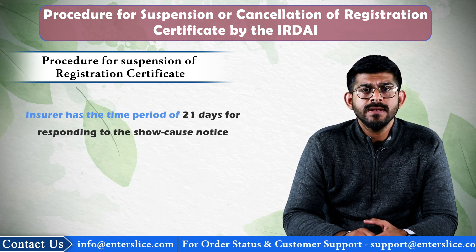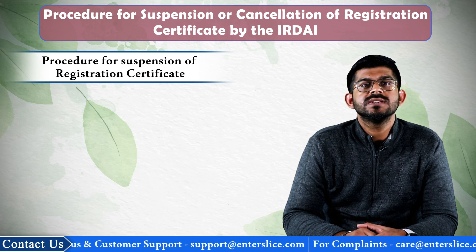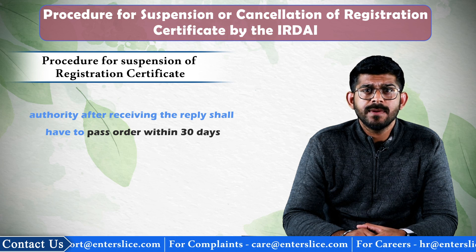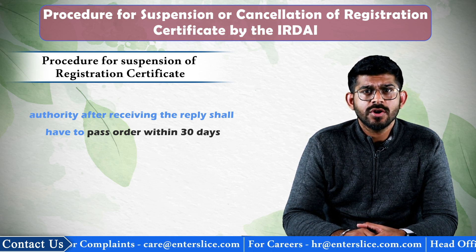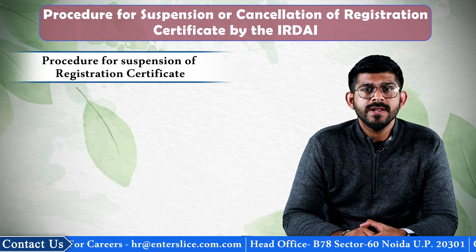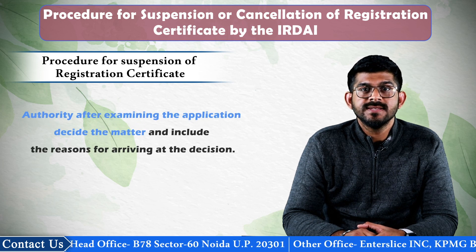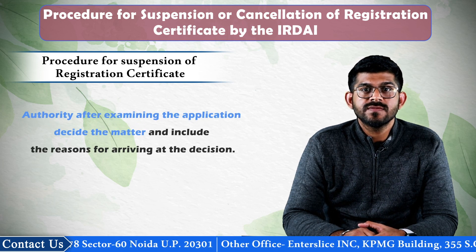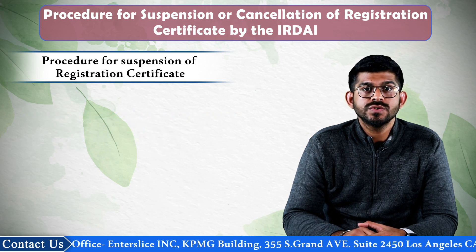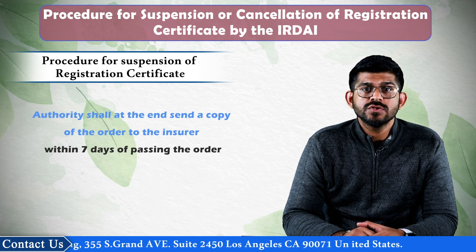However, if the authority is of the opinion that it is necessary in the interest of policyholders, then it may require the insurer to submit the response within such period as determined by the authority. The authority, after receiving the reply, shall pass the order within 30 days. If the authority does not receive any reply from the insurer against the show cause notice, then the authority may decide the issue ex parte. The authority, after examining the application, decides the matter and includes the reasons for arriving at the decision. It shall also include justification for the penalty imposed in the order. The authority shall at the end send a copy of the order to the insurer within seven days of passing the order.